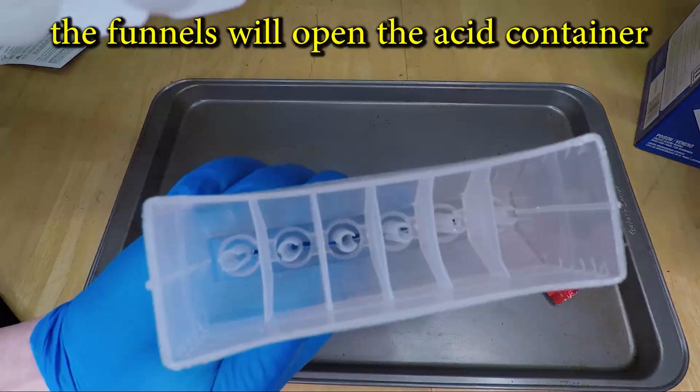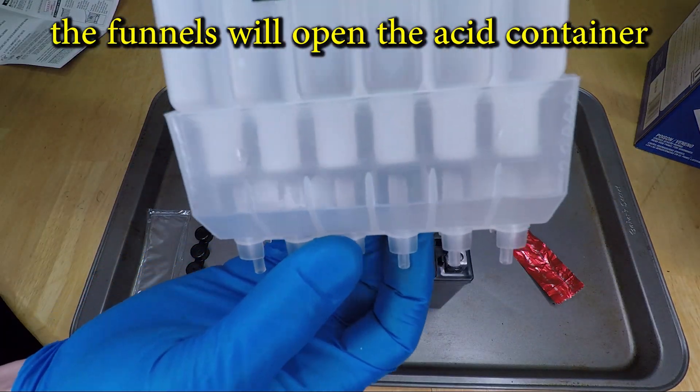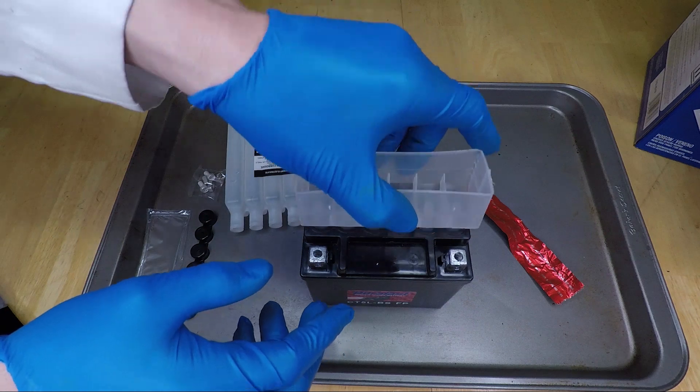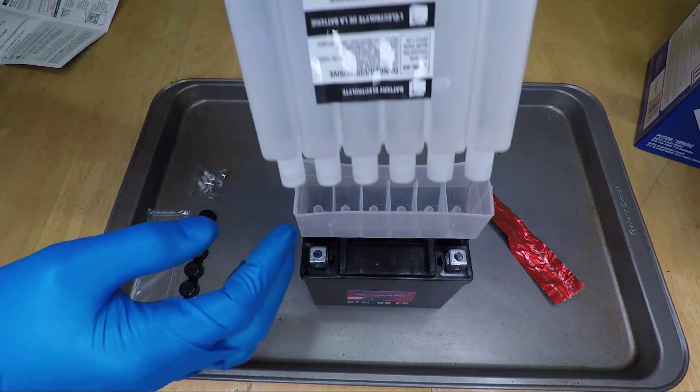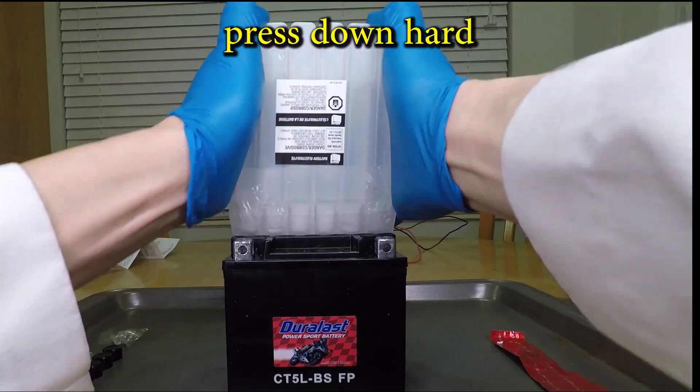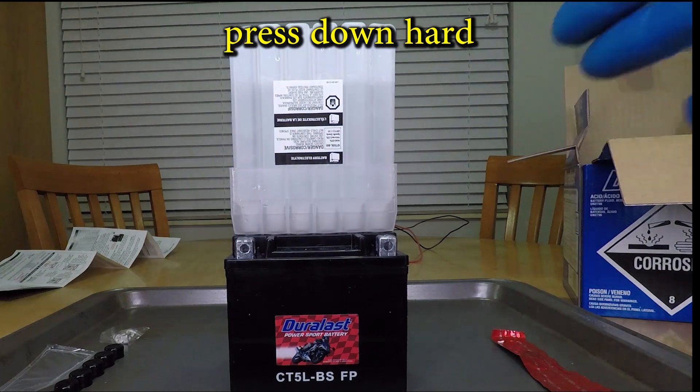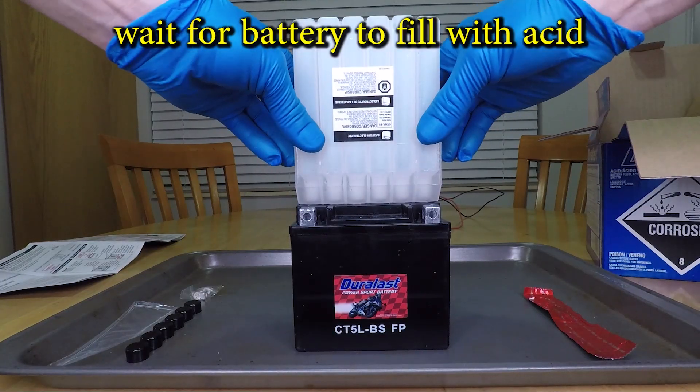Start by removing the battery seal. The funnel has sharp tubes that will open the acid container. Place the funnel into the battery, then press the acid container down hard to open it, then wait a minute as the acid fills the battery. Once it's done, remove the funnel.